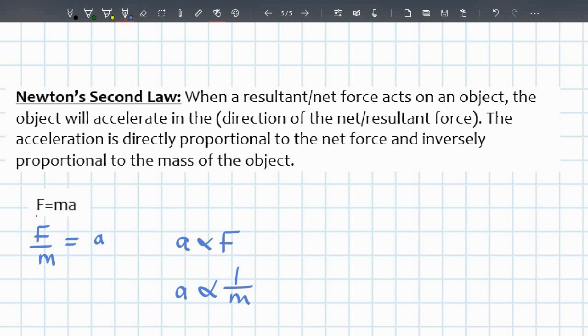Right? Or is directly proportional to 1 over m. What this means is acceleration is directly proportional to force and the acceleration produced is inversely proportional to the mass of the object. So that's just straight from the definition.